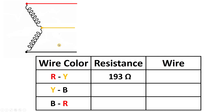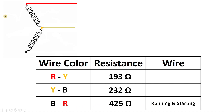Now between yellow wire and black wire I will measure resistance — I assumed 232 ohms. After this, between black wire and red wire I got 425 ohm resistance. In these values you just have to see between which two wires you are getting the highest resistance. You can see between red wire and black wire we got the highest resistance. This means these two wires are of the starting and running winding. The third wire — the one left out — is the common wire.